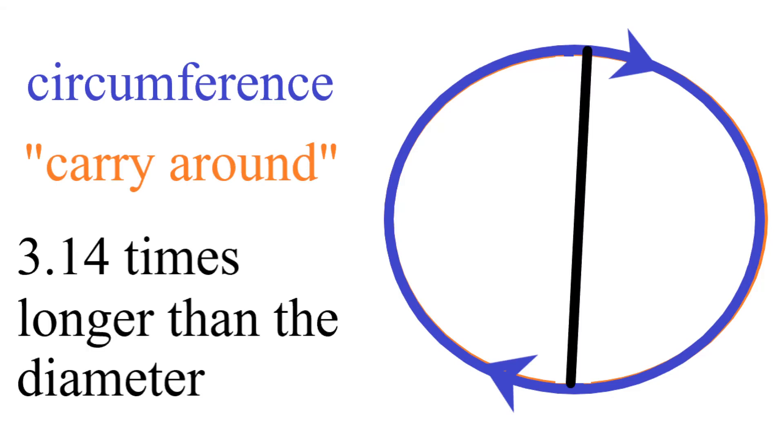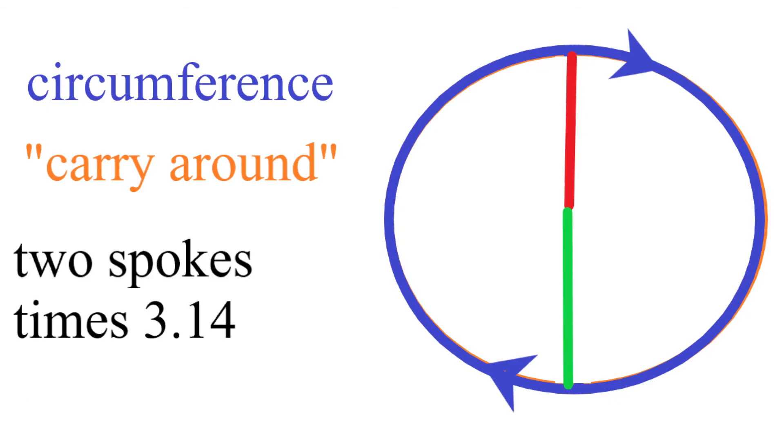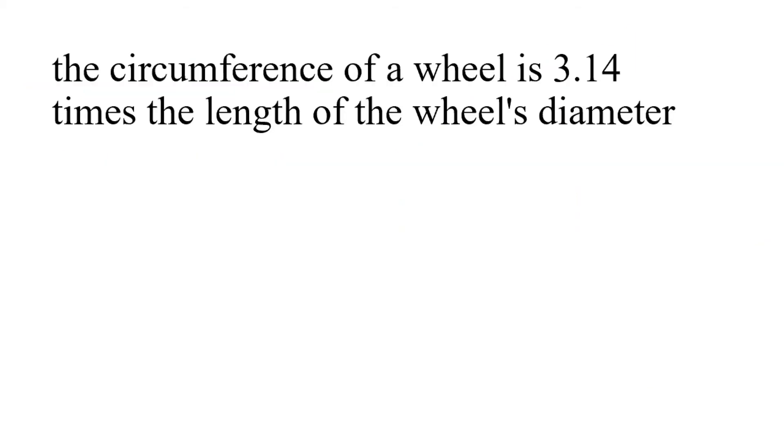As Archimedes discovered, this distance around the wheel is 3.14 times longer than the diameter, or it's two spokes lengths, two radii times 3.14. A rather amazing thing about mathematics is that we can make equations from normal human sentences. So the circumference of a wheel is 3.14 times the length of the wheel's diameter.